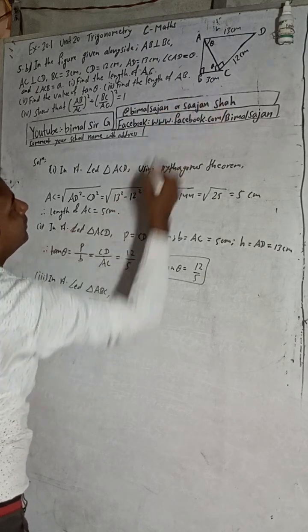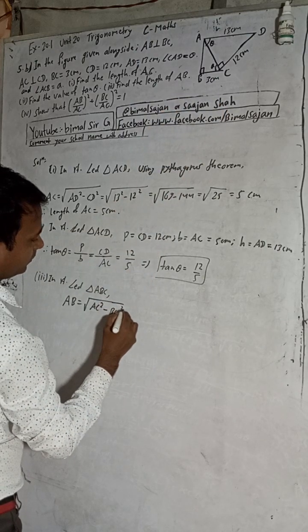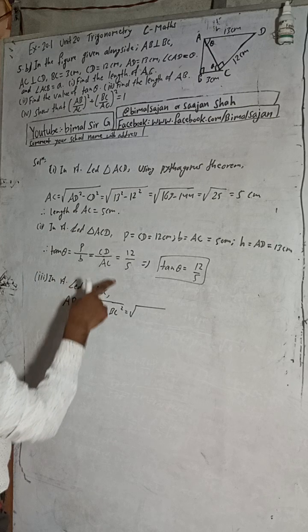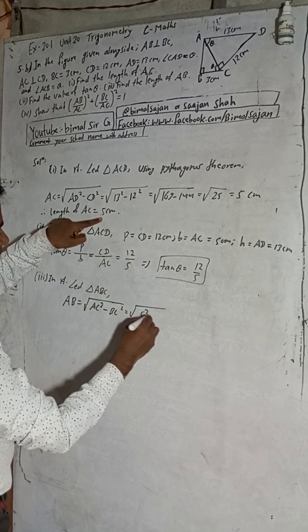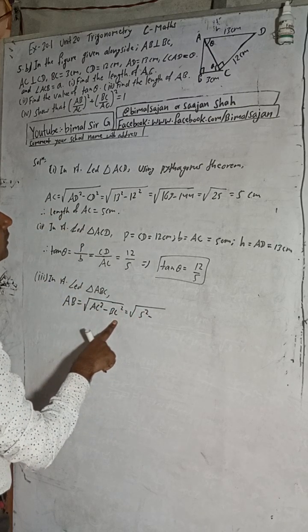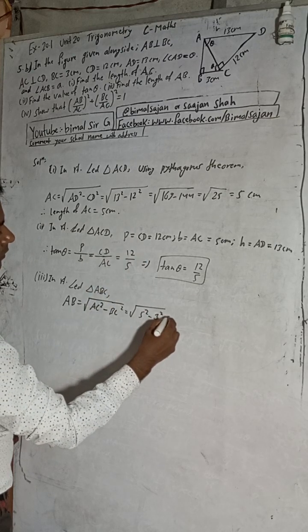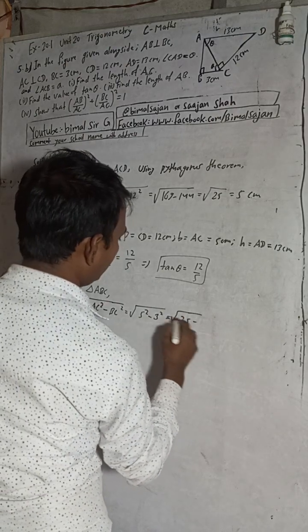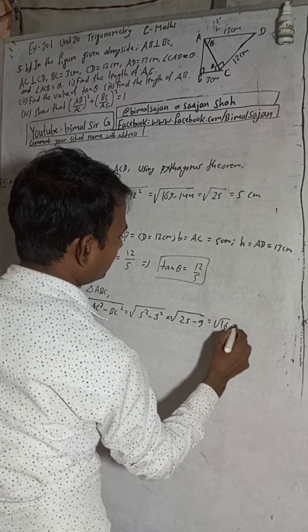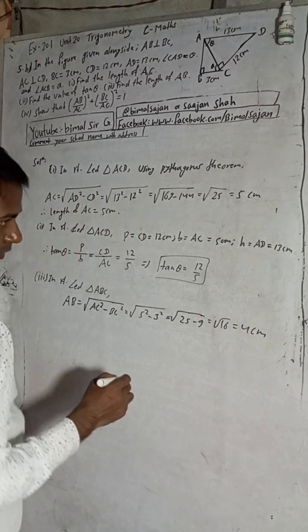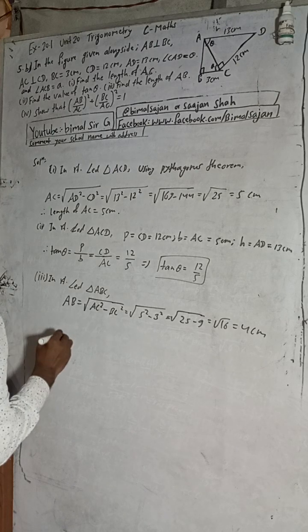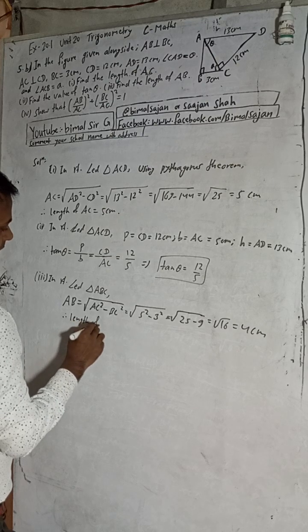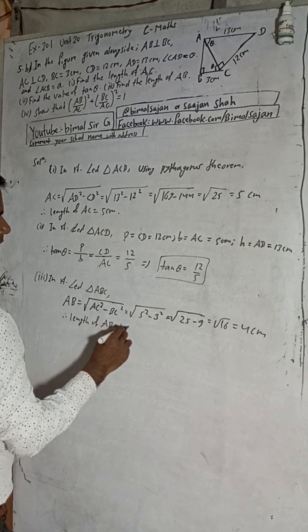AC square: we got AC equals 5, so 5 square, and BC is 3, so 3 square. This is 5 square which is 25 minus 9, so this equals 16, which is 4cm. Therefore, length of AB is equal to 4cm.